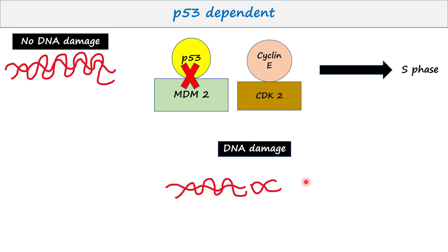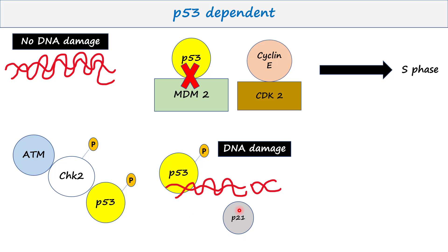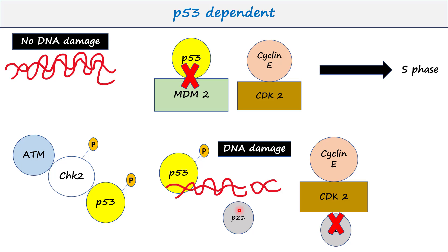If any type of DNA damage is present, ATM protein is activated. ATM protein phosphorylates CHK2. This CHK2 protein is now phosphorylated and it will phosphorylate P53 protein. Phosphorylated P53 protein is a transcription factor, so it binds DNA and induces the synthesis of P21 protein. P21 is a CDK inhibitor and it binds to CDK2 protein and inactivates the CDK2-Cyclin E complex. Hence, the cell cycle does not proceed toward S phase.